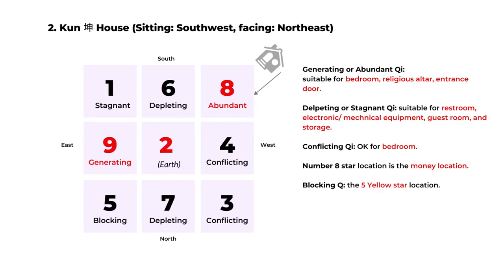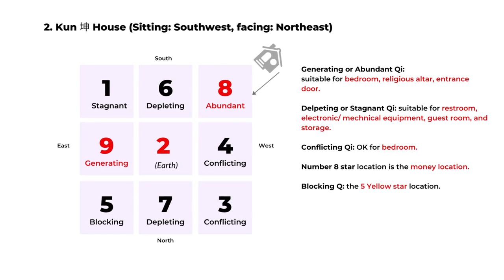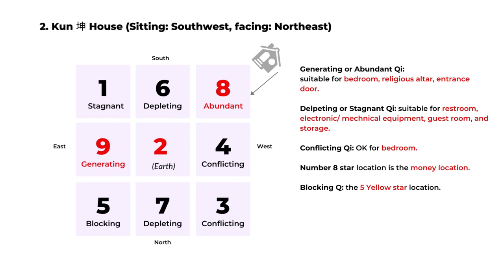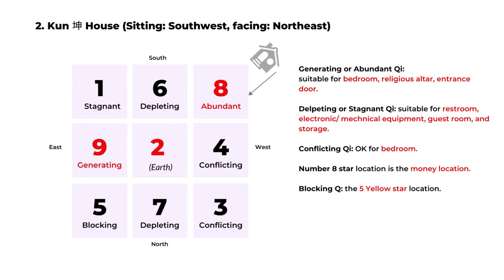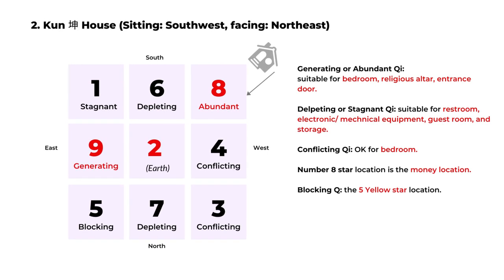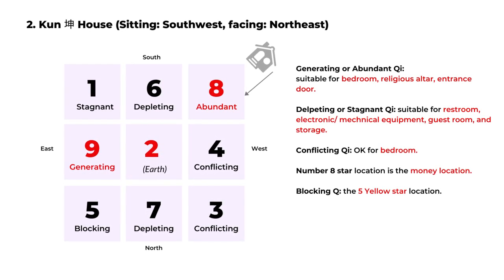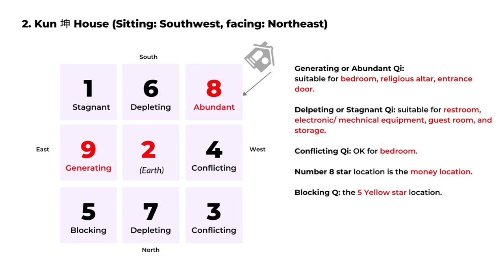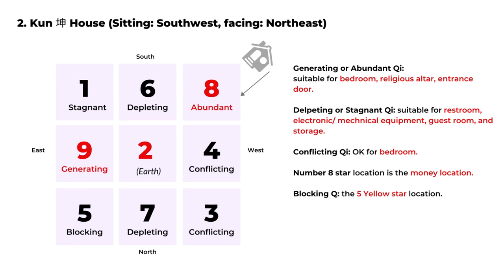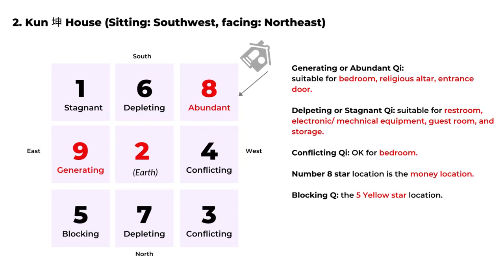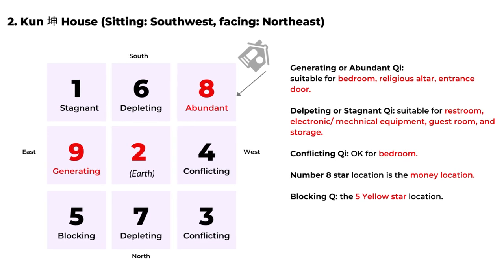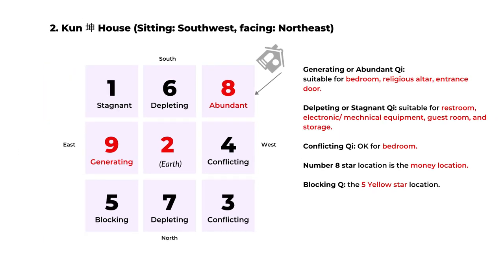Here is the second chart, for the Kun house. That means the house is sitting on the southwest and facing northeast, and the center is number two, the earth element. You can see the abundant area, and the number eight money area is in the southwest. Another lucky area is number nine for generating energy. The meaning of every star is the same as the general annual flying star chart — the numbers one, six, eight, and nine are the most auspicious stars.